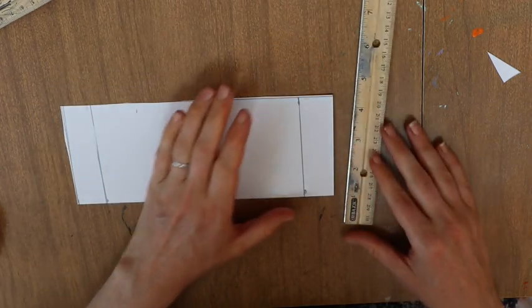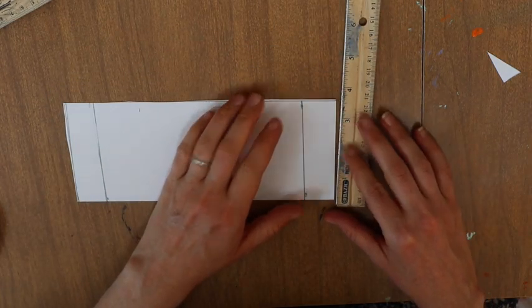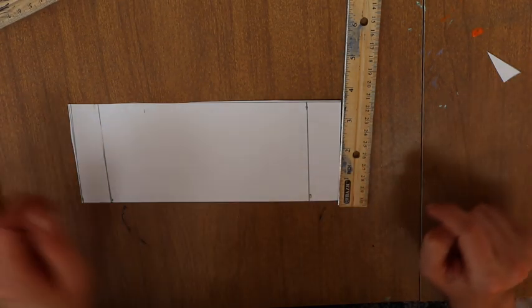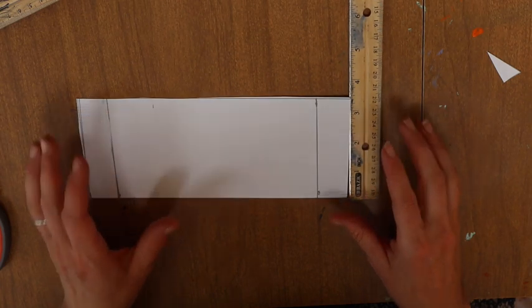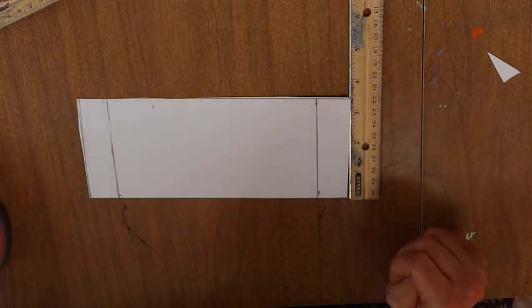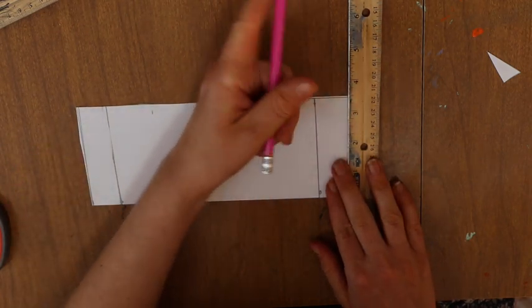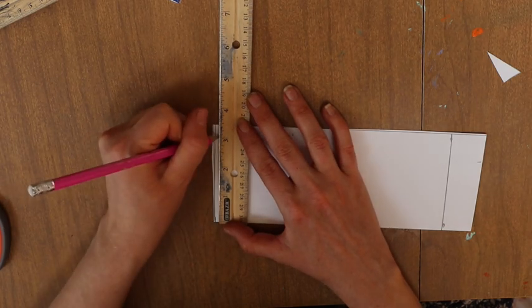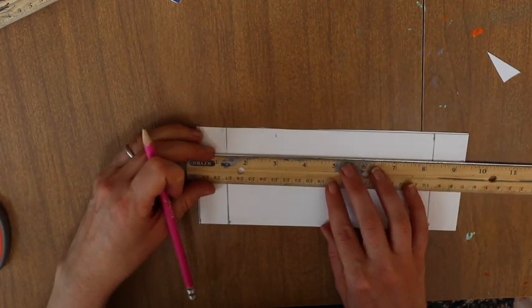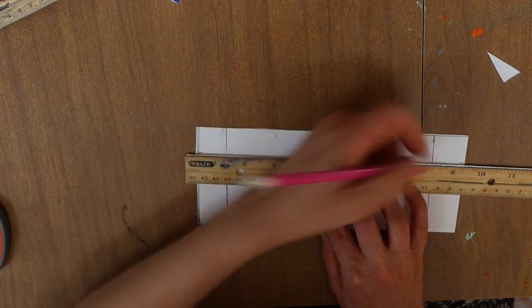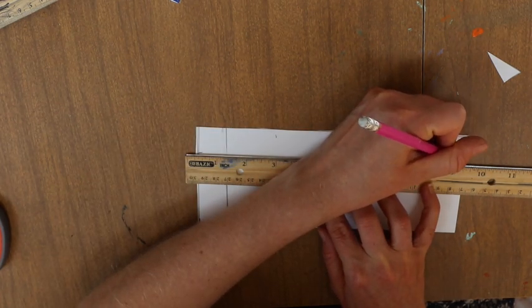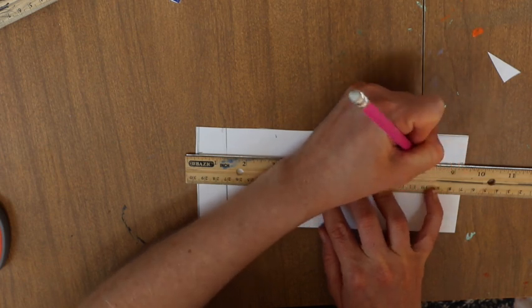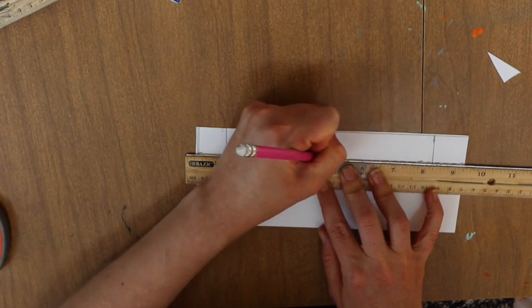All right, now we're going to place dots along the left and the right at one and a half. Oh I'm sorry. Now we're going to place dots along the left and the right at two and a half. And this is a dotted line for folding on.